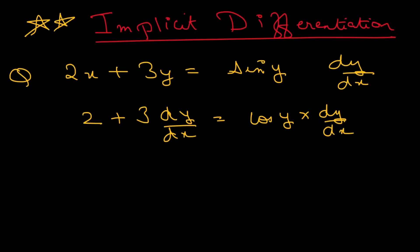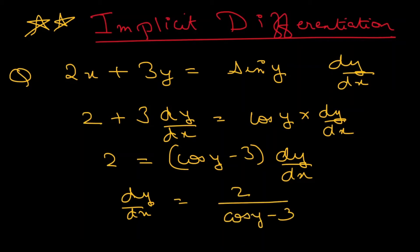So now I can take all the dy terms on one side. So this would become cos y minus 3 times dy by dx equals 2. So dy by dx is going to be 2 over cos y minus 3.